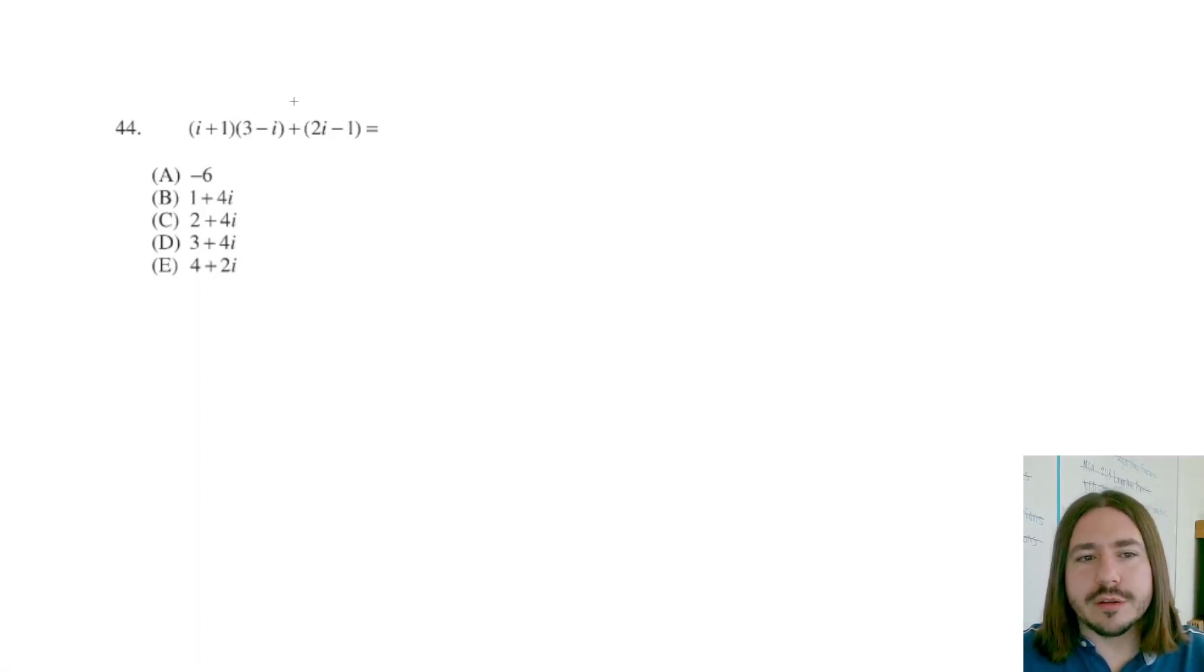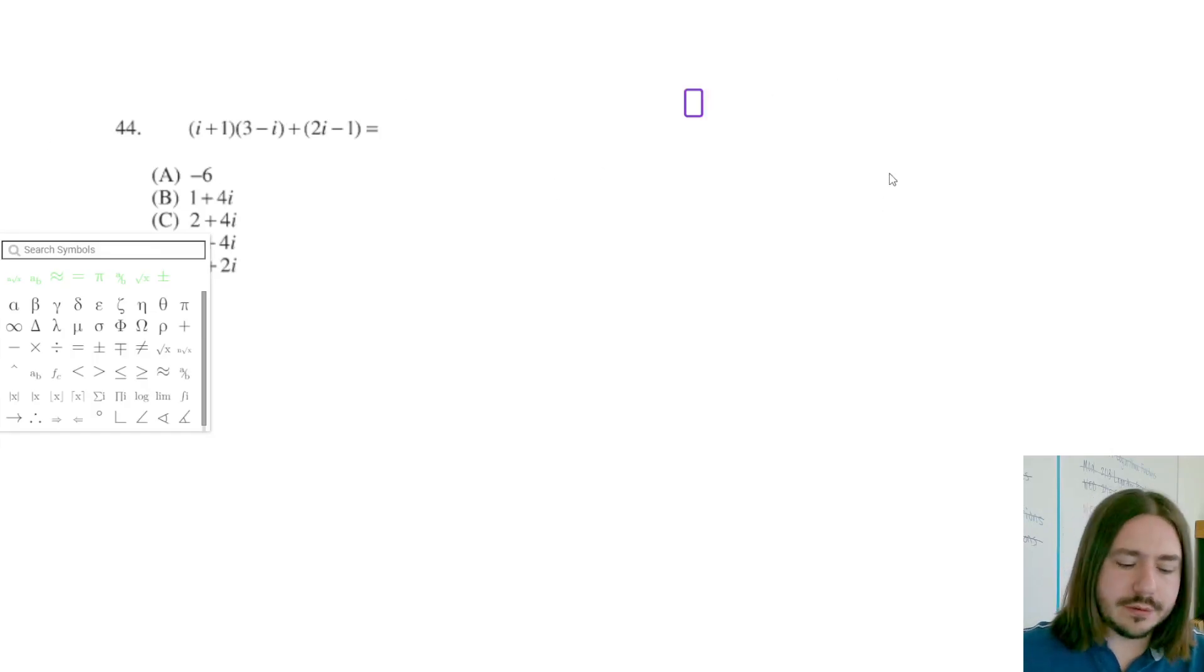Number 44, we are dealing with these complex numbers. So right off the bat, let me explain what I is. I is just a symbol that represents the number square root of negative one.